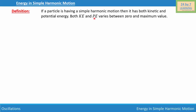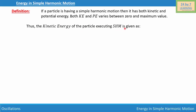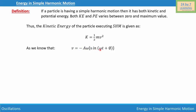Let's first find the kinetic energy. The kinetic energy of the particle executing simple harmonic motion is given as K = ½mv², where m is the mass of the particle and v is the velocity. As we know, the velocity of a particle in SHM is v = −Aω sin(ωt + φ).